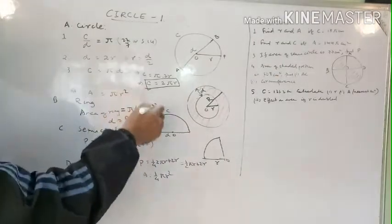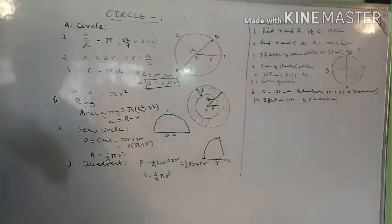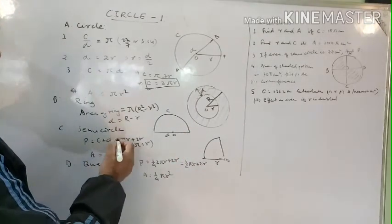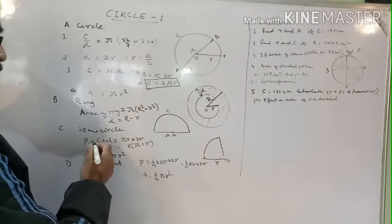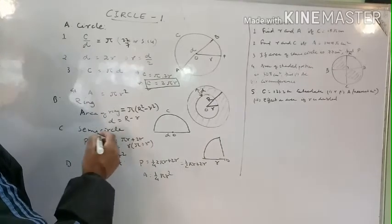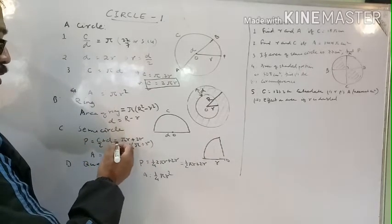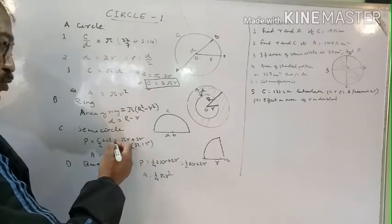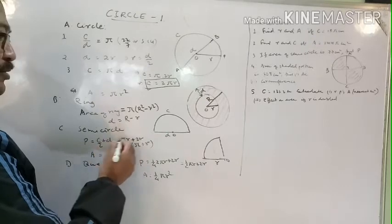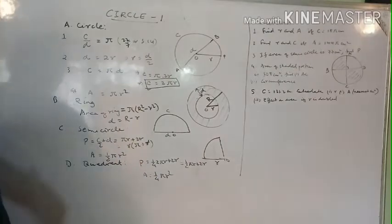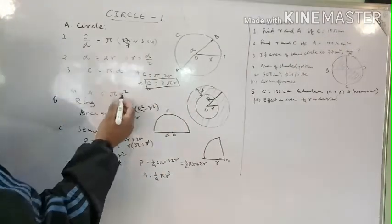A semicircle is half of a circle. The perimeter of a semicircle is half of the circumference plus the diameter. Circumference is 2πr, so half is πr; plus d which equals 2r. Taking r common, the perimeter formula is r(π + 2). The area of a semicircle is half of πr², so (1/2)πr².